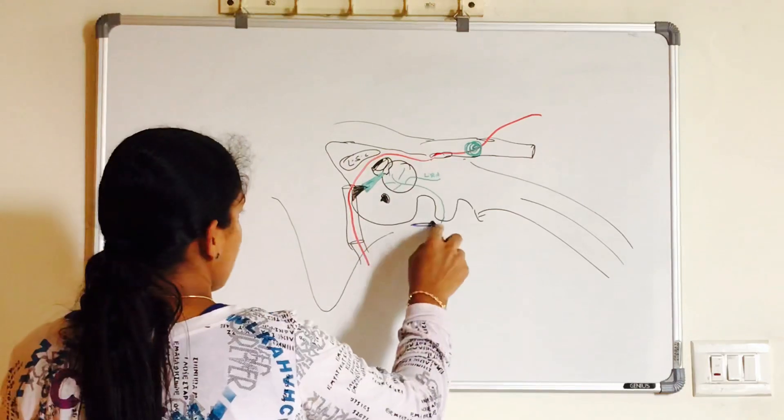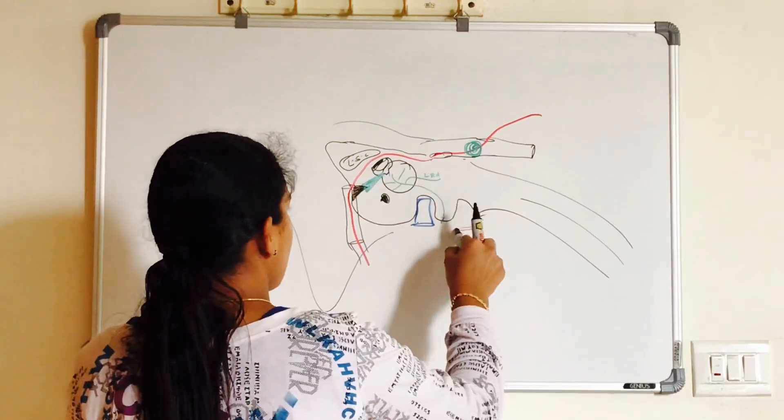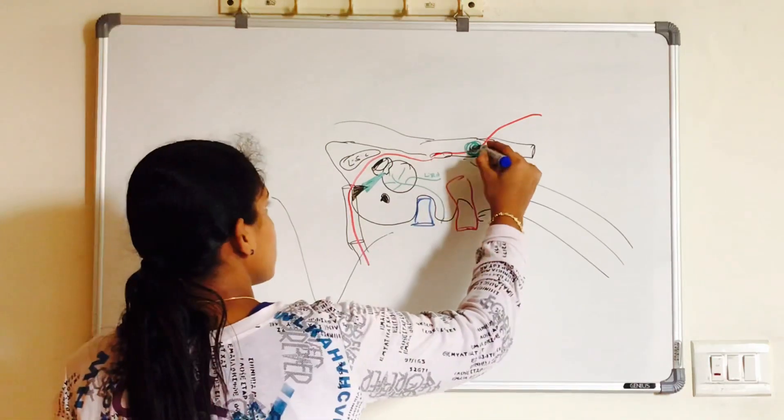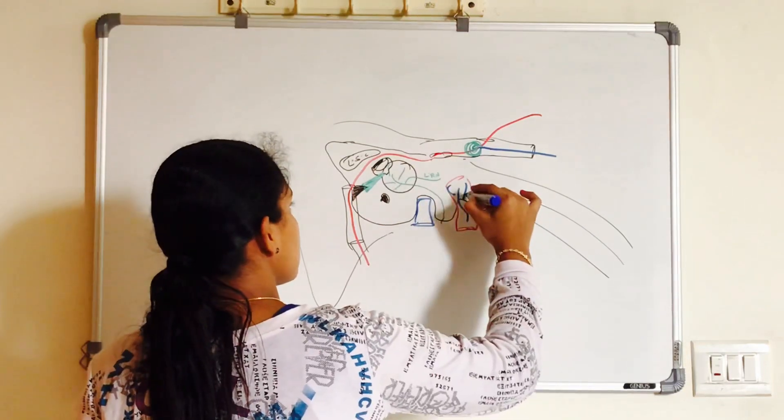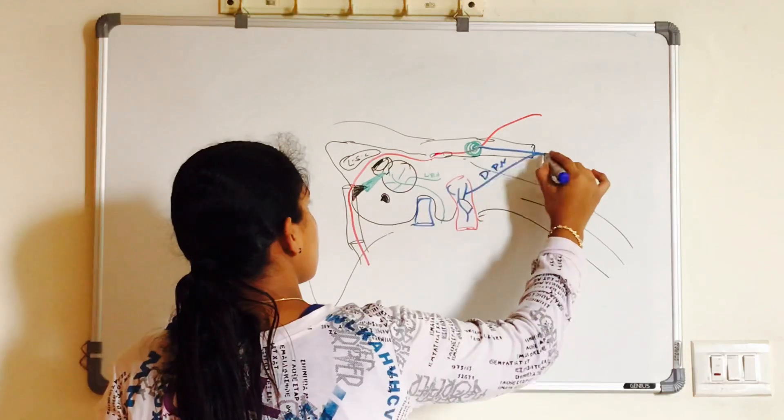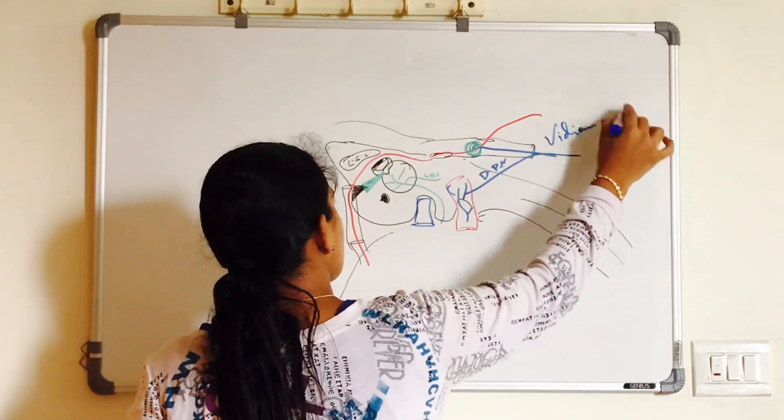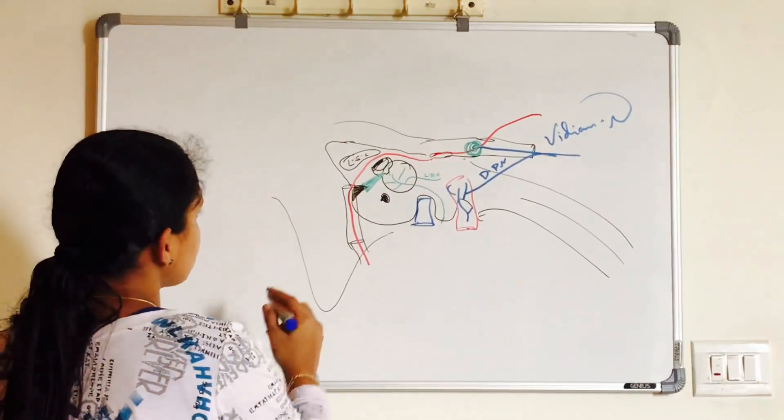Stapedius is attached to the pyramid which is present in the posterior wall of middle ear cavity. Inferiorly, you can see the jugular fossa, internal jugular vein and carotid canal, internal carotid artery. Plexus around the internal carotid artery forms a nerve called deep petrosal nerve which joins your greater petrosal nerve to form vidian nerve.